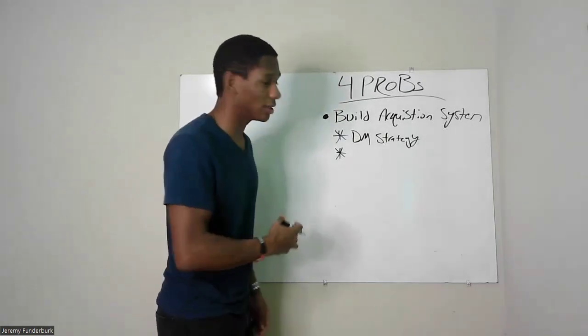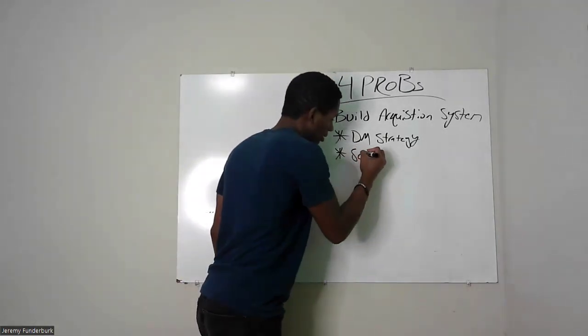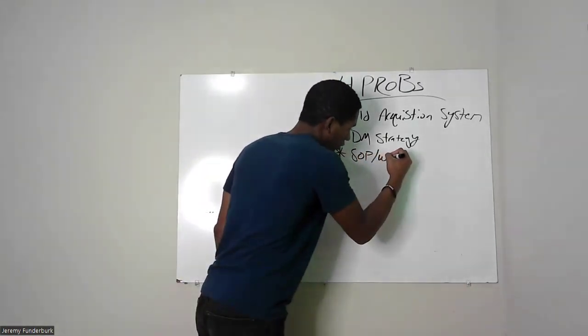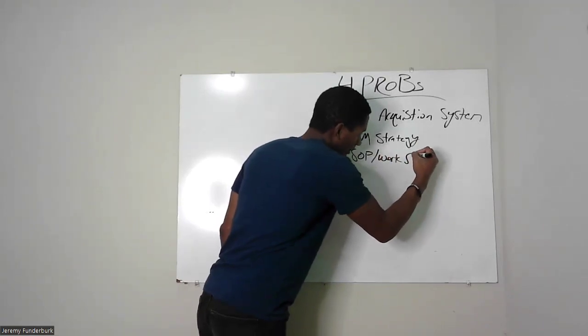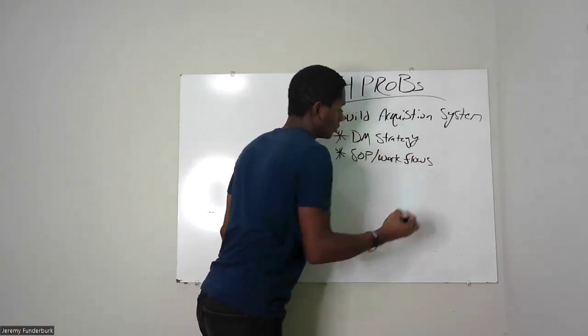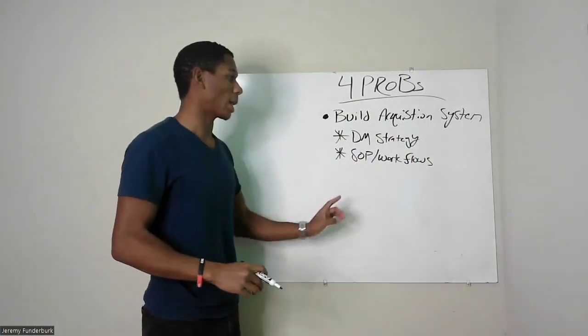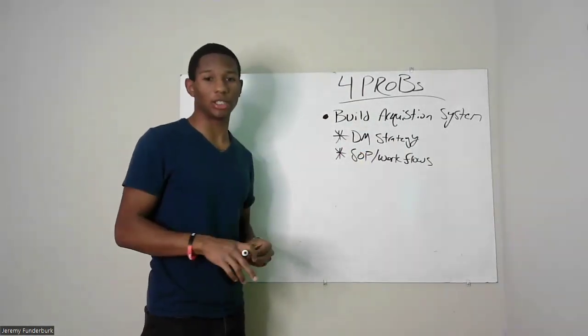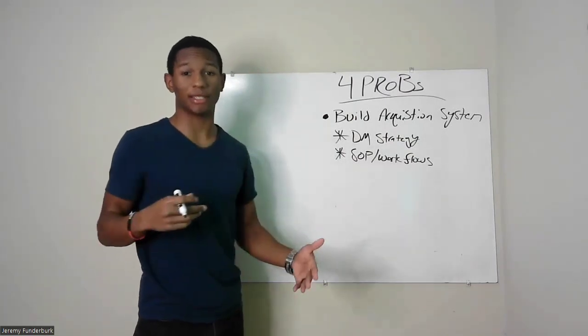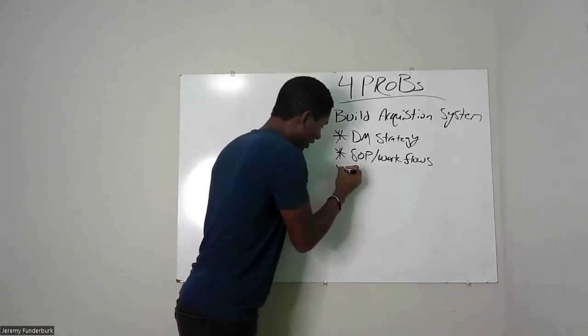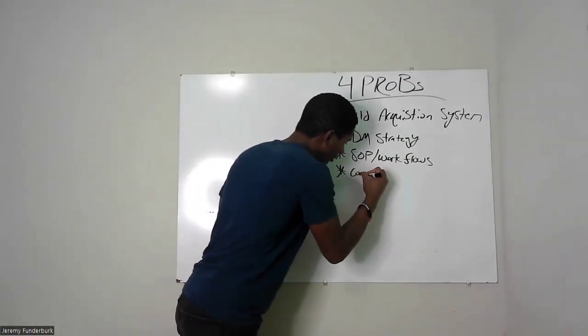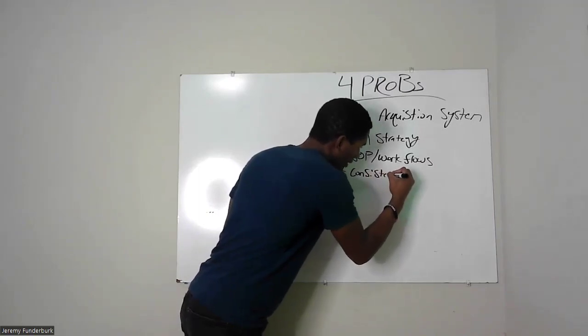The next thing you're going to need to do is create your SOPs and workflows. Once you have a strategy, you need to have a system in place that allows you to implement that strategy on a consistent basis. Which leads to the third thing: you need consistency.